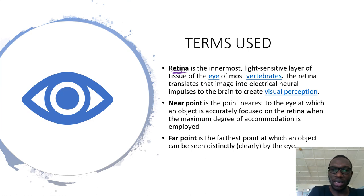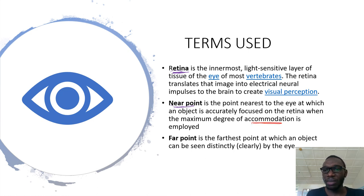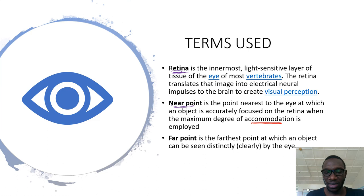The next term is the near point. The near point is the point nearest to the eye at which an object is accurately focused on the retina when the maximum degree of accommodation is employed. Accommodation is the ability of the eye to adjust the focal length in order to be able to see distant and nearby objects. For the normal eye, the near point is about 25 centimeters — that's the point where you can place an object and still see it clearly.